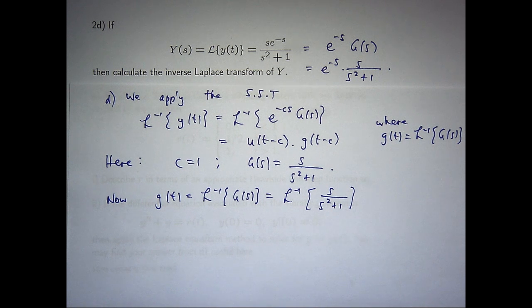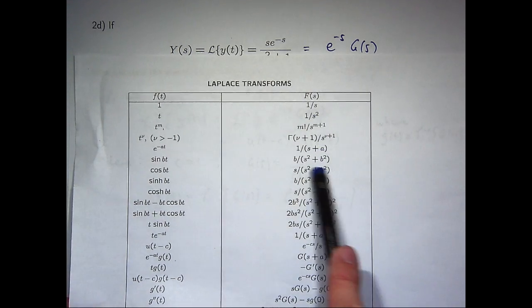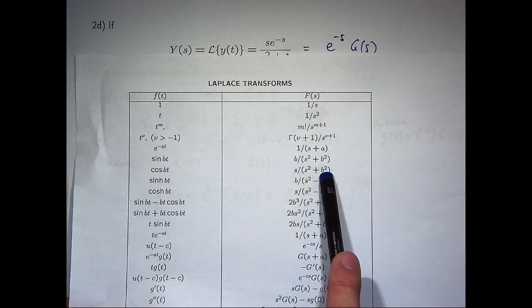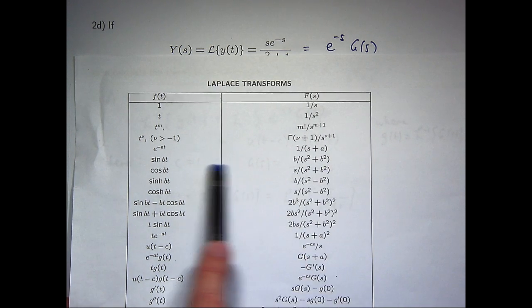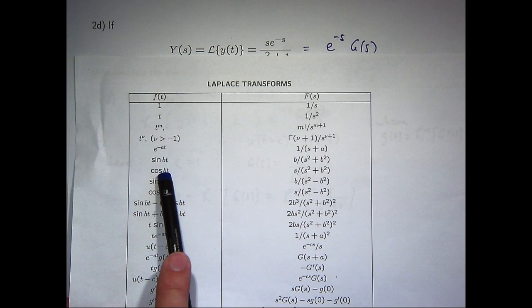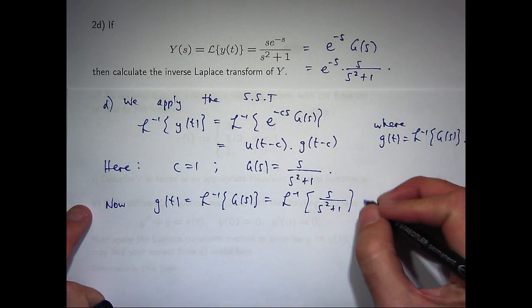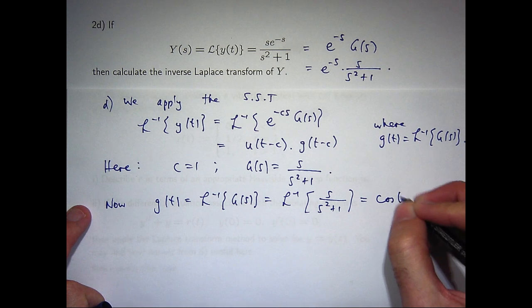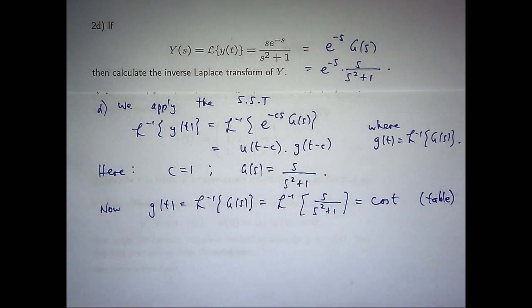We have to take the inverse transform of s on s squared plus 1. So let's have a look down our table, we get down to here, well that looks pretty good. If I let b equal 1, I'll get s on s squared plus 1 down the bottom. So the inverse transform of this would be cos bt with b equals 1, such as cos t.